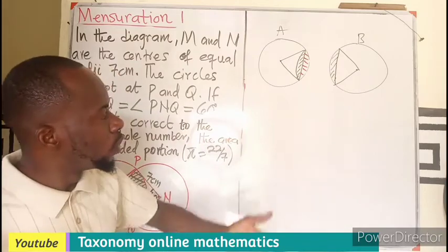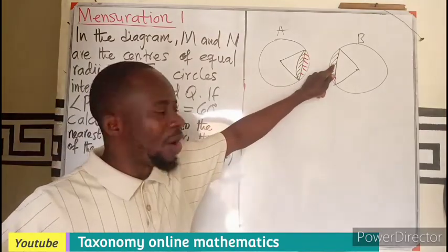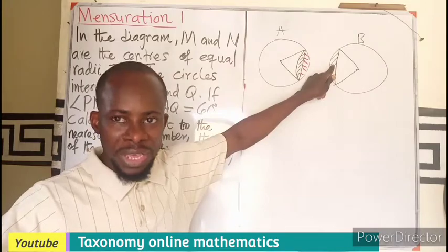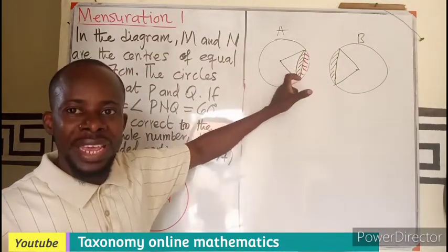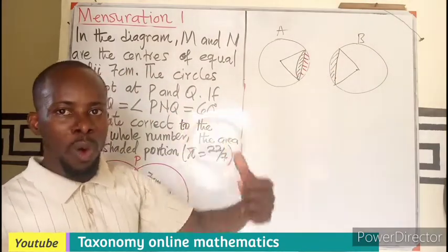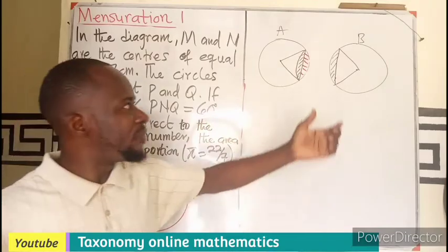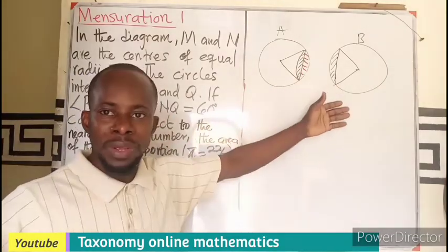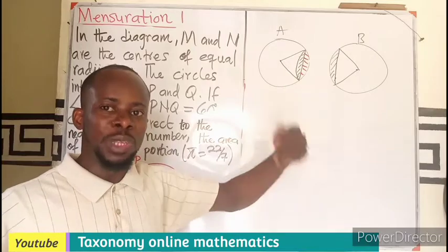What I need to do is to find the area of segment B plus the area of segment A and add them together. Or I can go a short way by finding the area of one of them, the segment, then multiply by 2.